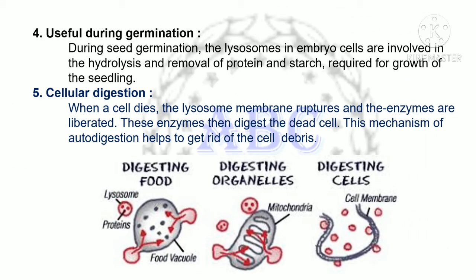The fourth important function is their role during germination. During seed germination, lysosomes in embryo cells are involved in the hydrolysis and removal of proteins and starch required for the growth of the seedling. The fifth function is cellular digestion. When a cell dies, the lysosome membrane ruptures and enzymes are liberated. These enzymes digest the dead cells, and this mechanism of autolysis helps to get rid of cell debris.